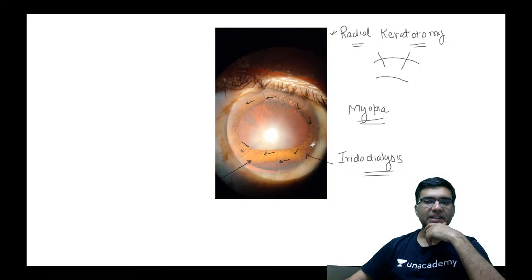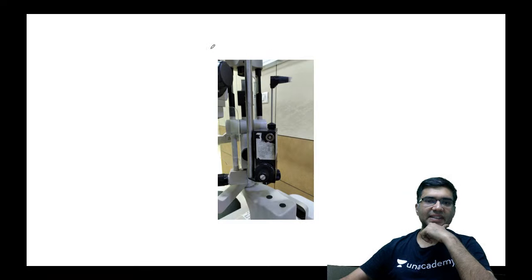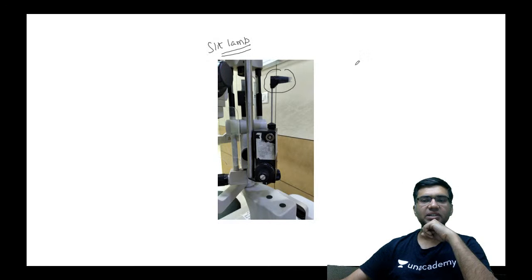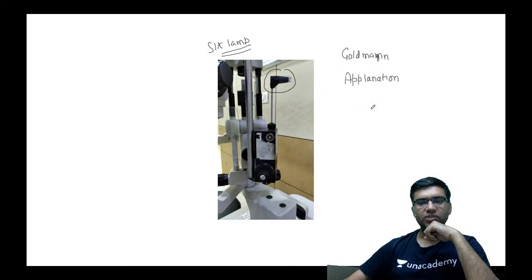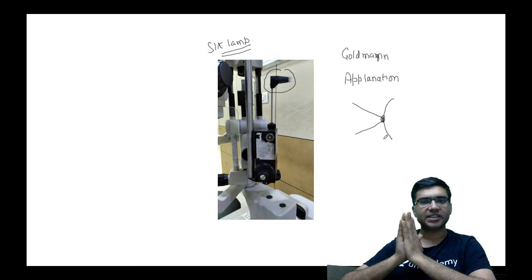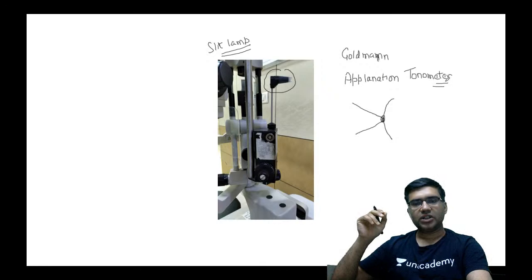In this next spotter, a prism is mounted on the slit lamp. I use this instrument to measure intraocular pressure. This is called Goldman applanation tonometry. The tonometer touches — not presses — the cornea, and is used to measure intraocular pressure.